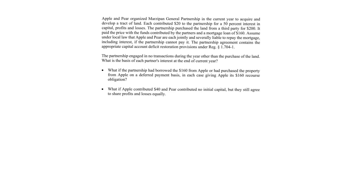Apple and Pear organized Marzipan General Partnership in the current year to acquire and develop attractive land. Each contributed $20 to the partnership for a 50% interest in capital, profits, and losses. The partnership purchased the land from a third party for $200, paying with the funds contributed by the partners and a mortgage loan of $160. Under local law, Apple and Pear are each jointly and severally liable to repay the mortgage if the partnership cannot pay it. The partnership agreement contains the appropriate capital account deficit restoration provisions under Reg 1.704-1, and the partnership engaged in no transactions during the year other than the purchase of the land.